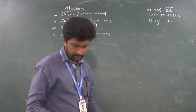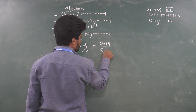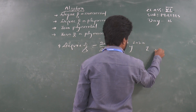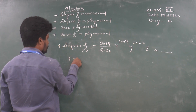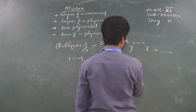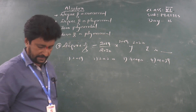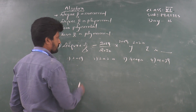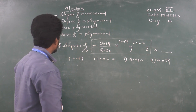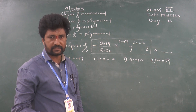Let us take one problem on these concepts. Find the degree of the monomial: minus 2019/2020 times x to the power 2019, y to the power 2020, z. The options are: 2019, 2020, 4039, and 6039. This is a monomial — only one term. The degree of a monomial is the sum of the indices of all the variables in the term.